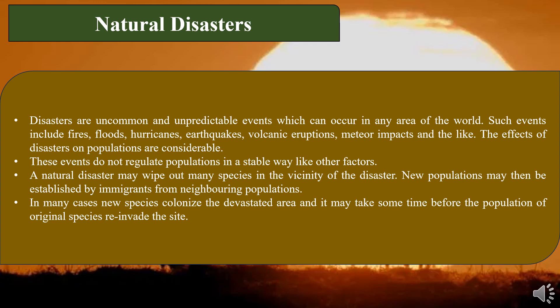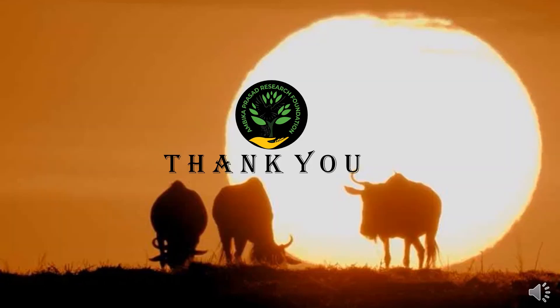The effects of disasters on populations are considerable. These events do not regulate populations in a stable way like other factors. A natural disaster may wipe out many species in the vicinity of the disaster. New populations may then be established by immigrants from neighboring populations. In many cases, new species colonize the devastated area and it may take some time before the populations of the original species reinvade the site.